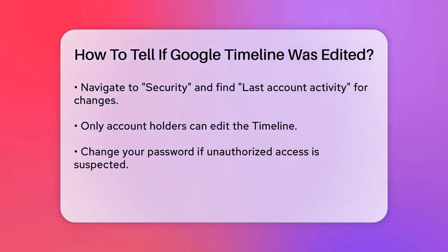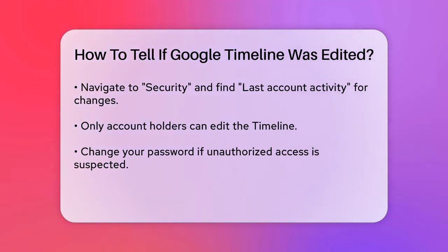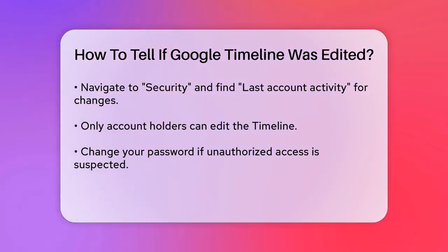You can also check the history of edits by looking at the activity log associated with your Google account. To do this, go to the Google account settings, then navigate to Security, and look for Last Account Activity. Here, you can see recent changes in activities, including any edits made to your timeline.